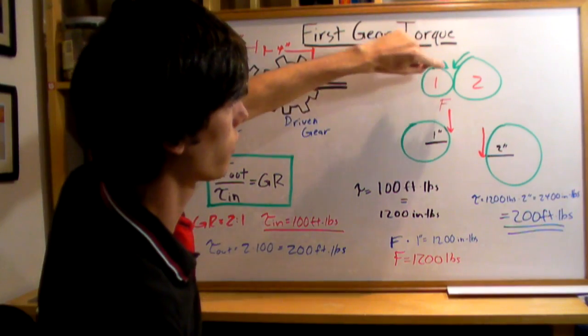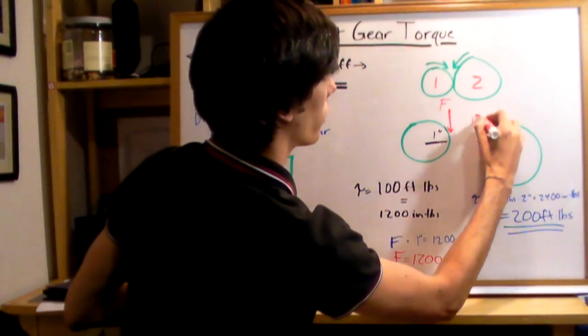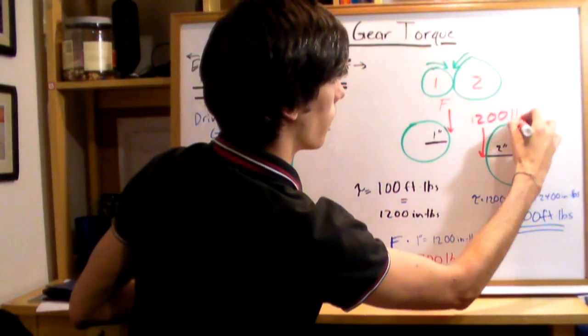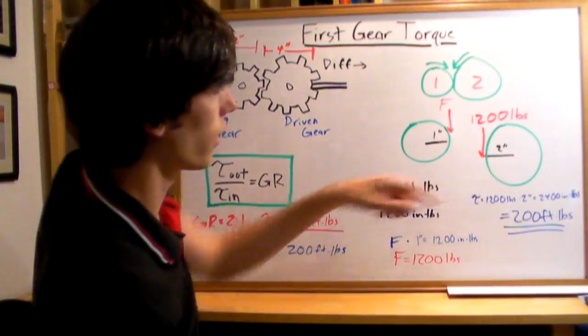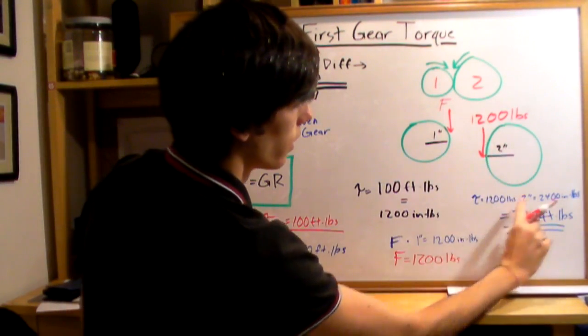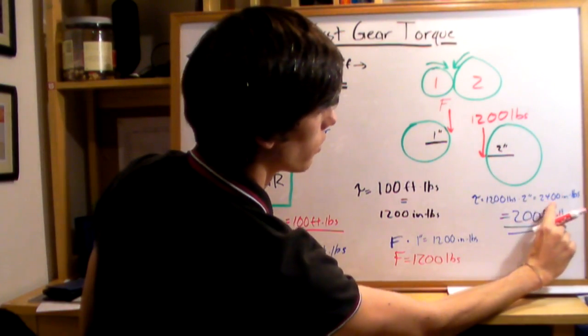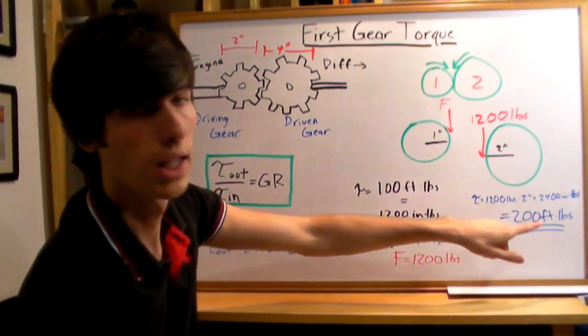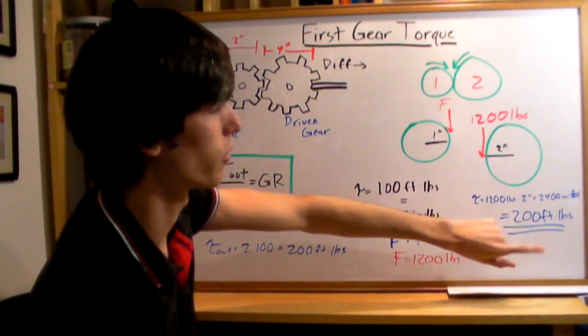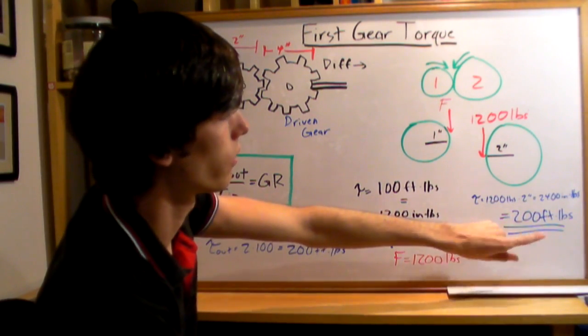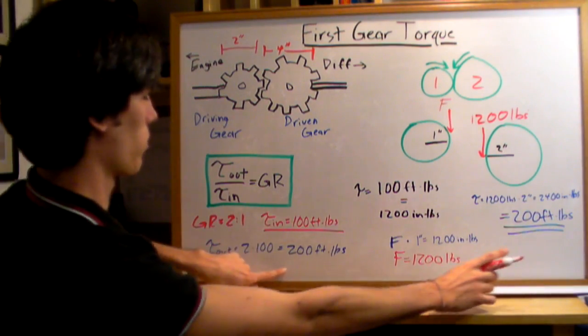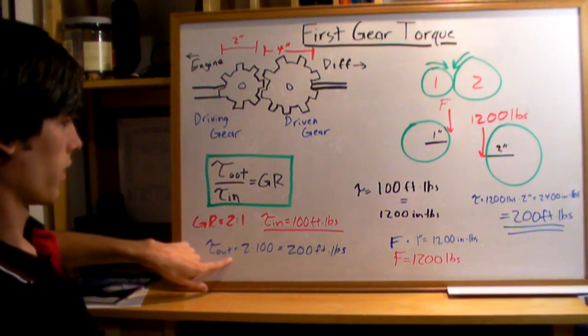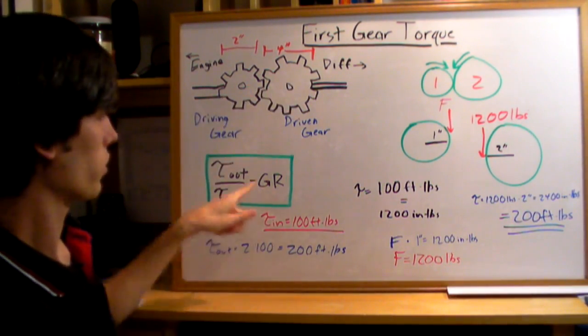Now that we know that force is 1200 pounds, we've got 1200 pounds of force coming down on this gear. 1200 times the 2 inch radius is 2400 inch-pounds. If you divide this 2400 inch-pounds by 12, you get 200 foot-pounds. That's the same we calculated earlier for the output to the differential. So that's where this equation comes from.